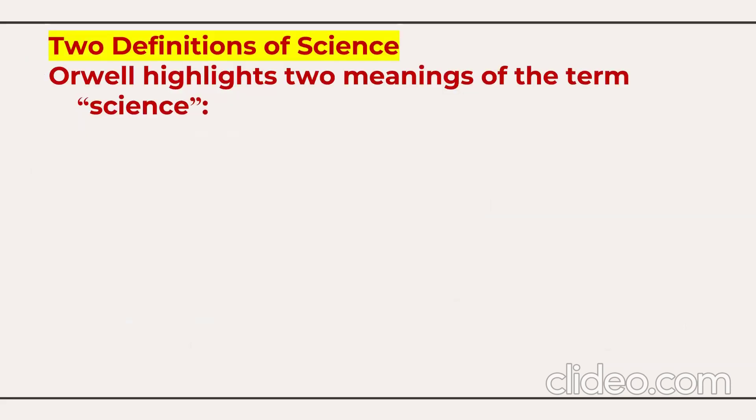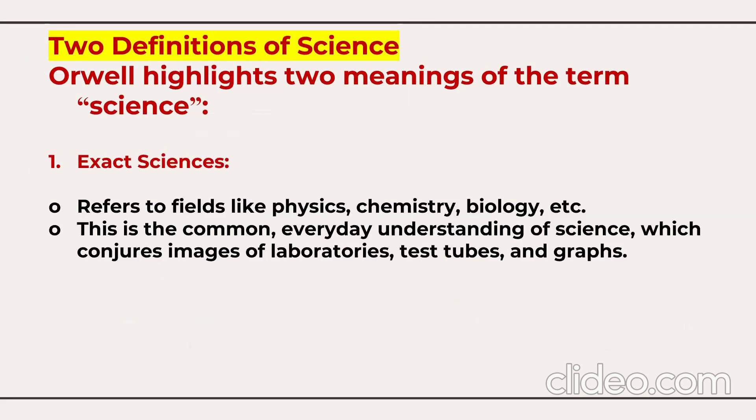George Orwell highlights two meanings of the term 'science.' The first meaning is exact sciences — fields like physics, chemistry, and biology. This is the common everyday understanding of science, which brings to mind images of laboratories, test tubes, and graphs.